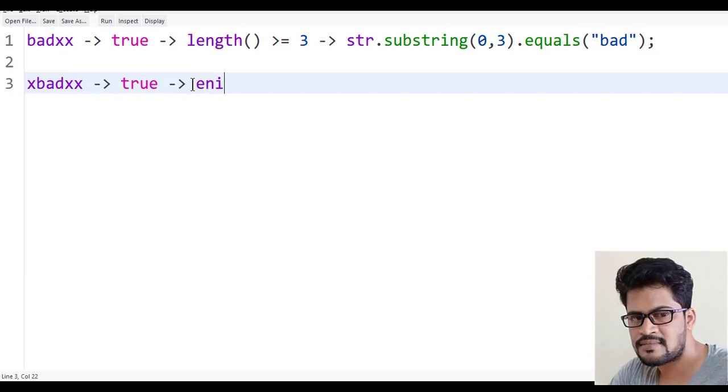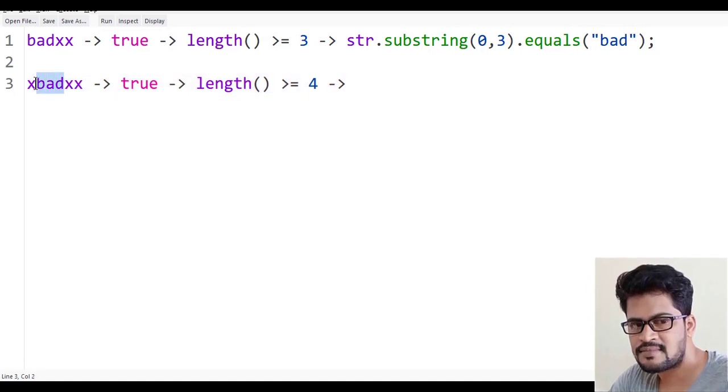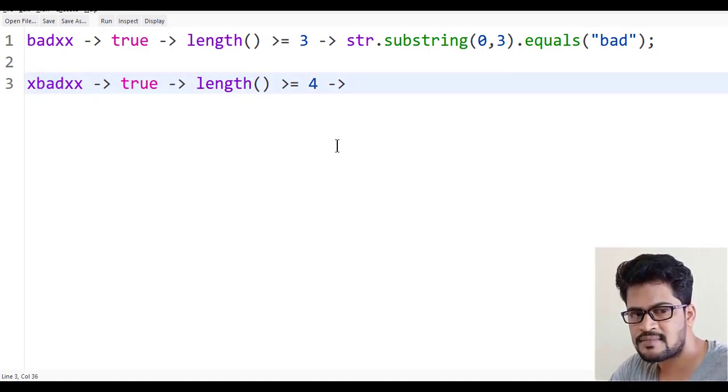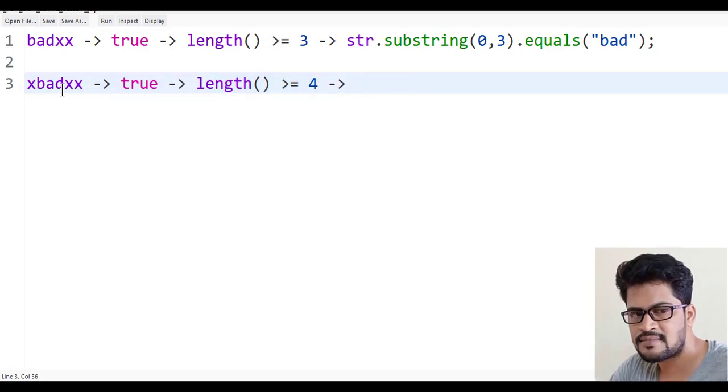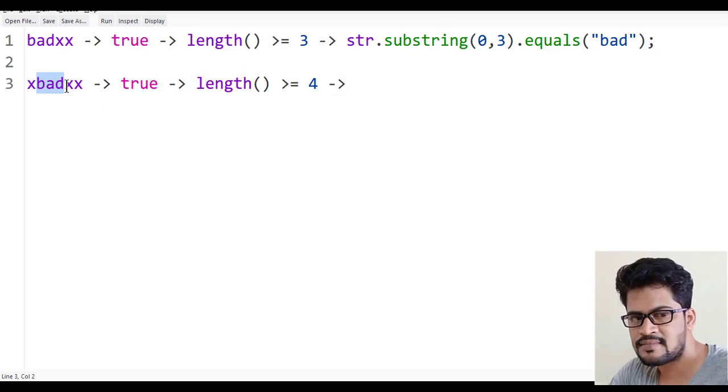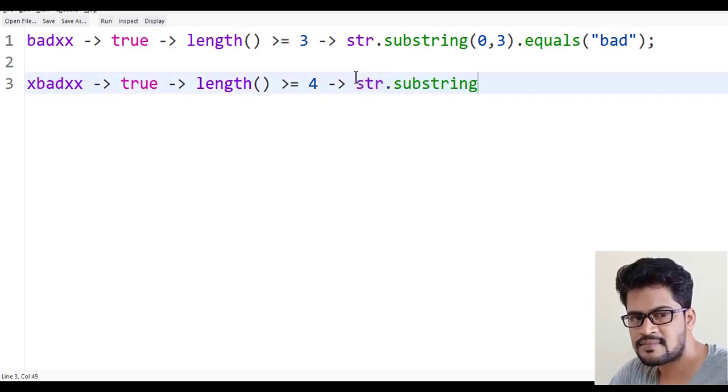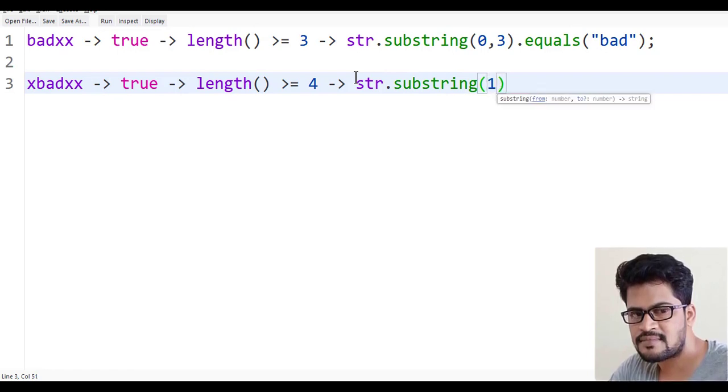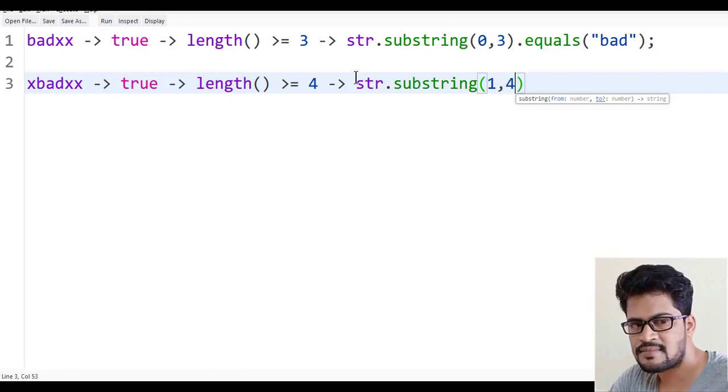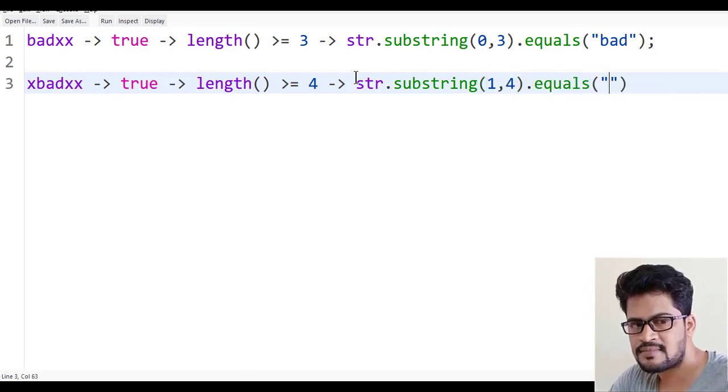So minimum length should be four characters, then only you can achieve this. Length is greater than or equal to 4, and also how to check this 'bad' substring? str.substring(1, 4).equals("bad").